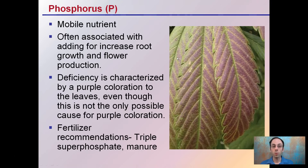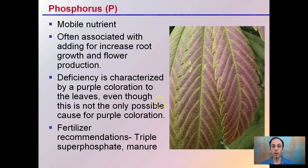Phosphorus is also a mobile nutrient, often associated with increased root growth and flower production. Deficiency is characterized by a purple coloration of the leaves, as we can see here — though this is not the only possible cause for purple coloration, as other stresses can also cause it. Triple superphosphate is a great fertilizer to remedy that, as well as manure. With the amount of bloom fertilizers most growers use, this tends not to be an issue — it's typically the other case where growers are over-adding phosphorus.